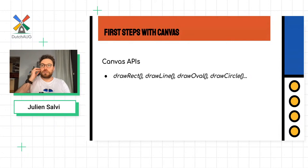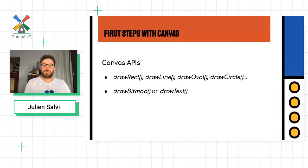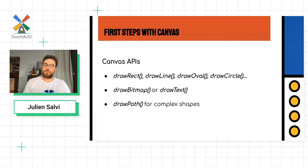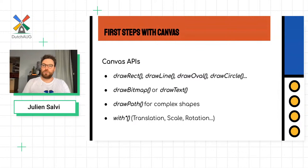Let's see some canvas APIs. For example, you can call drawRect to draw a rectangle, drawLine to draw a line between position A and position B, drawOval to draw an oval, drawCircle to draw a circle. All basic shapes are available. You can also draw bitmaps or draw text inside a canvas. There's also the path API for complex shapes — you can define very complex shapes with lots of corners and edges. And there are transforms: translate, scale, rotation — to apply transformations to your shapes.